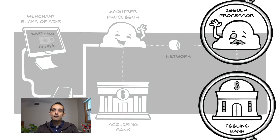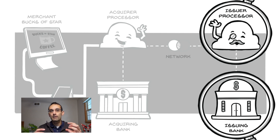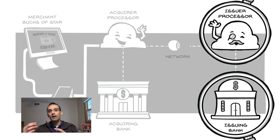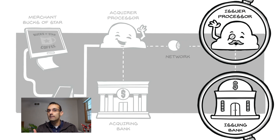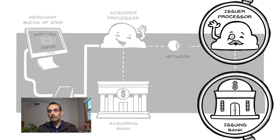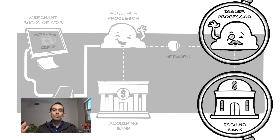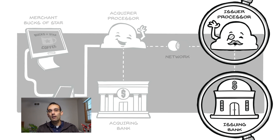The issuer processor is the technology layer that sits in between the bank and the network, which would be either Visa or MasterCard, Discover, etc. They've got a unique piece of hardware that allows you to connect very quickly with the card networks, and it communicates with the issuing bank.